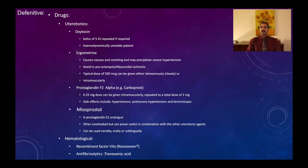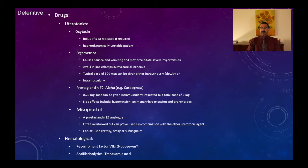For uterine atony, use uterotonics. Oxytocin (Syntocinon) 5 units IV slowly — remember the patient is shocked, so administer slowly with vasopressors. Ergometrine 500 micrograms IM (not IV — contraindicated for direct IV use) causes nausea, vomiting, and can precipitate myocardial ischemia or infarction. Misoprostol, an E1 analogue, can be used in combination with other drugs and has the advantage of oral, rectal, and sublingual administration.